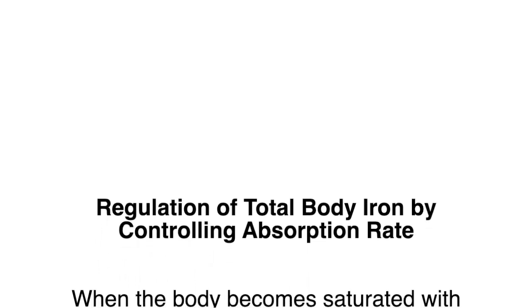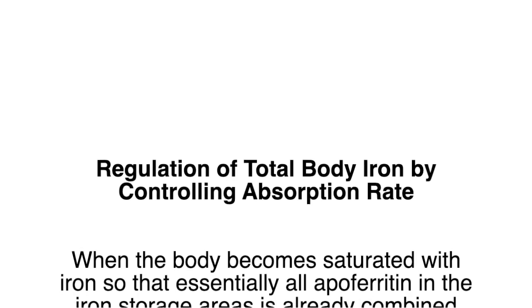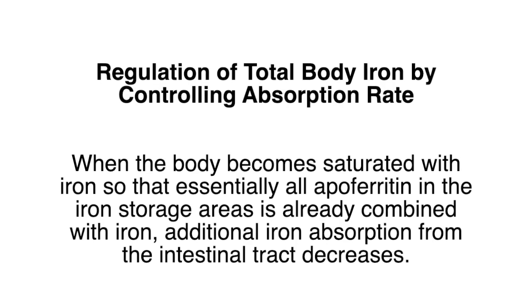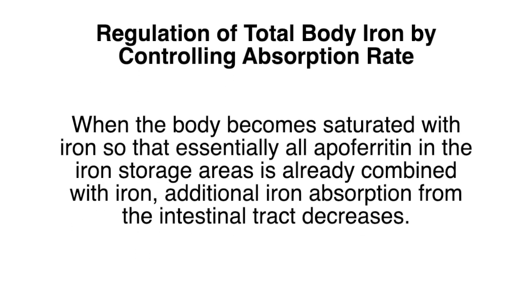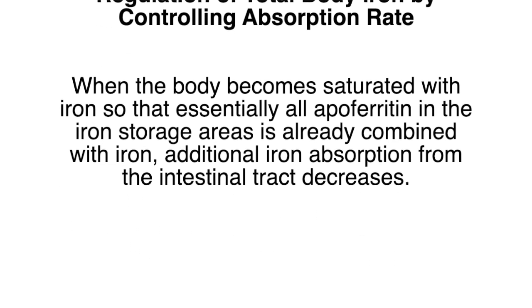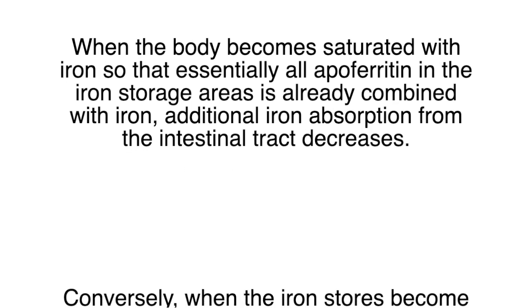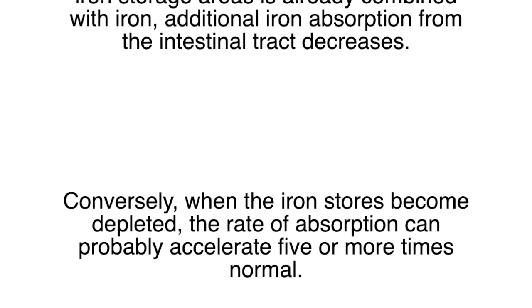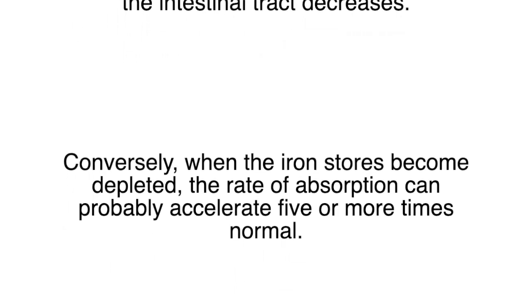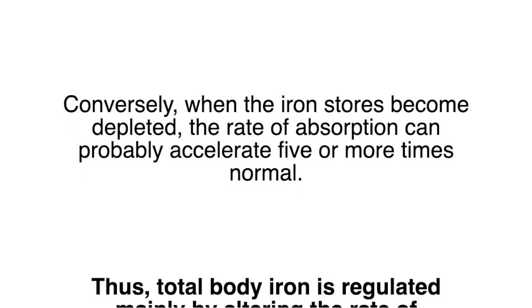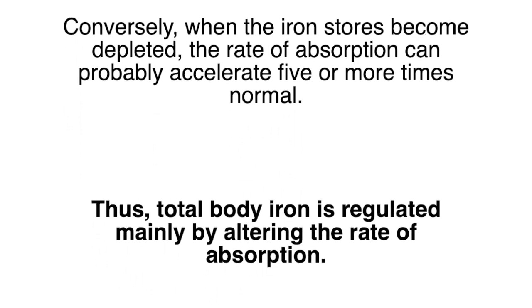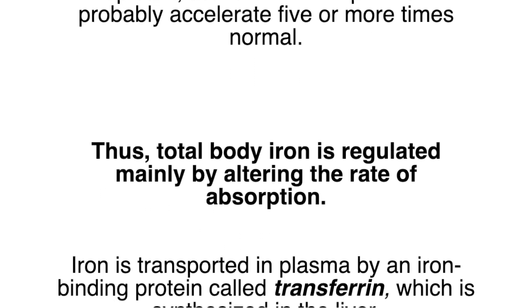Regulation of total body iron by controlling absorption rate: When the body becomes saturated with iron so that essentially all apoferritin in the iron storage areas is already combined with iron, additional iron absorption from the intestinal tract decreases. Conversely, when the iron stores become depleted, the rate of absorption can probably accelerate 5 or more times normal. Thus, total body iron is regulated mainly by altering the rate of absorption.